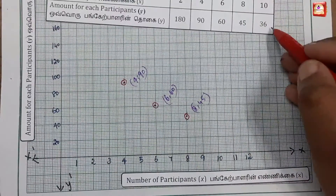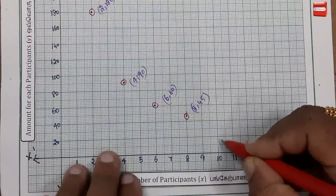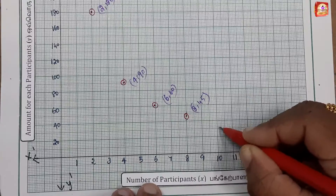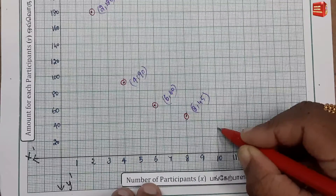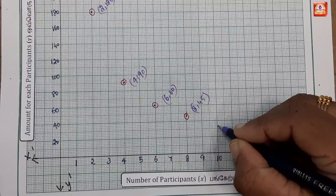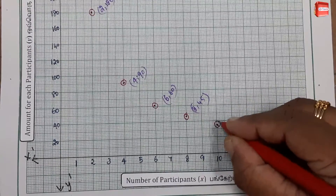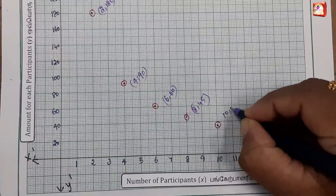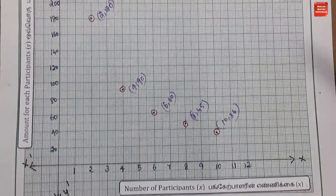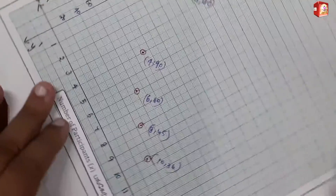The last point is (10, 36). We locate x equals 10 and y equals 36 and mark the final point on the graph.